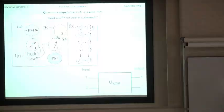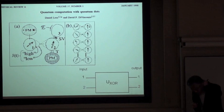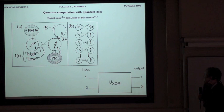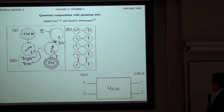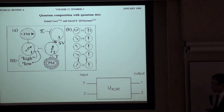We have been working on spin qubits with quantum dots following the scheme proposed by Daniel Loss and David DiVincenzo more than ten years ago. The universal set of quantum gates will be given by making a so-called XOR gate, or controlled-NOT gate.